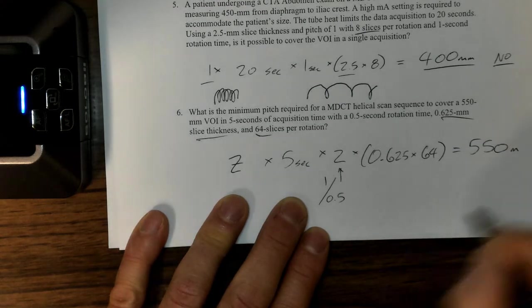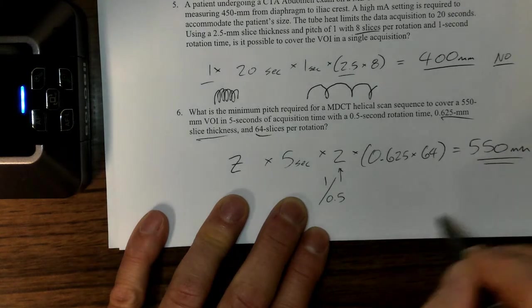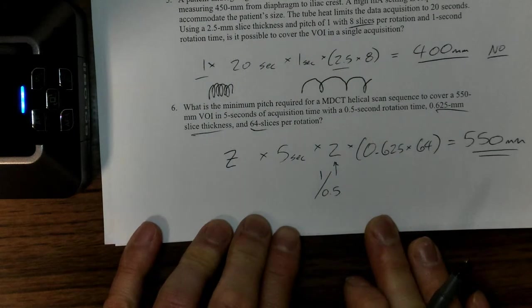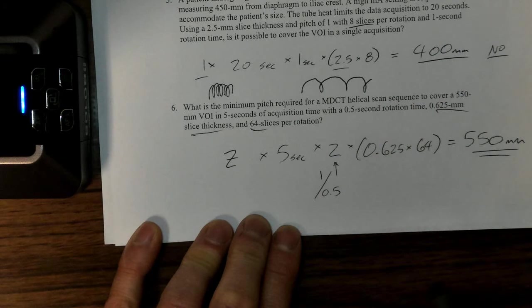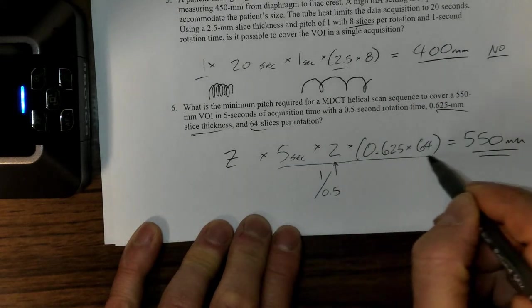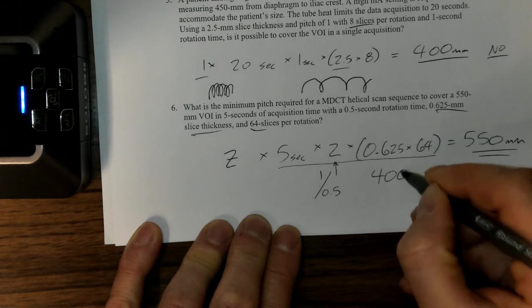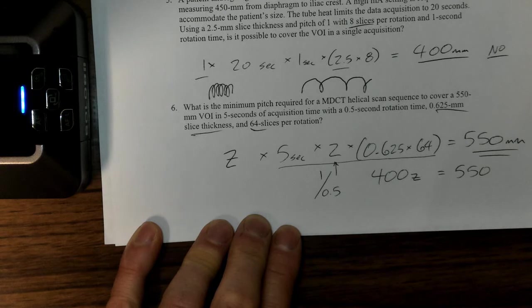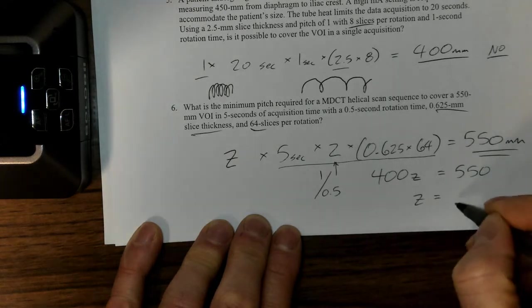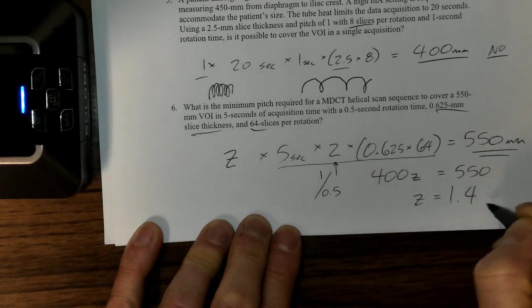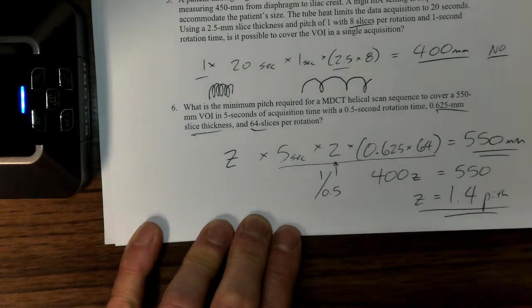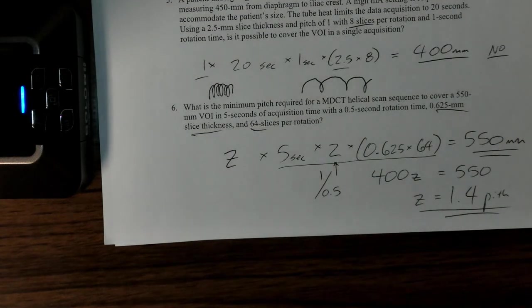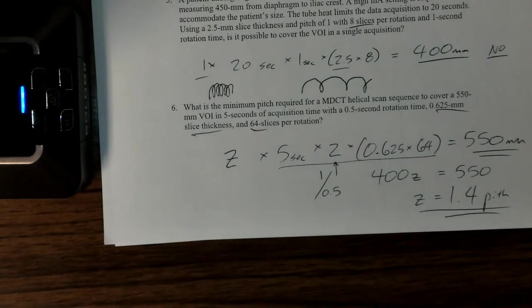That gives me 550, which is what I need to cover—550 millimeters of area that I need to cover during the acquisition in order to get the pictures that I need. If I multiply all of this out, that gives me 400 times z equals 550, so the pitch will need to be, if I divide these out, 1.4. That's the amount of pitch. The answer is I need to program in a pitch that's a little bit larger than one, but it's less than 1.5, so it's still in the range of fairly ideal pitches.